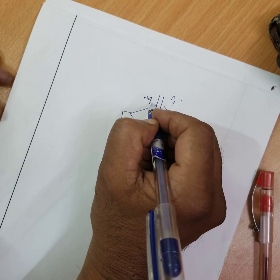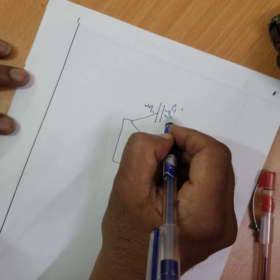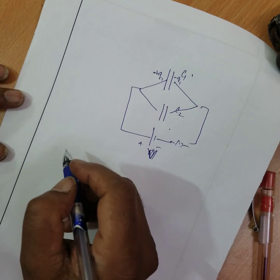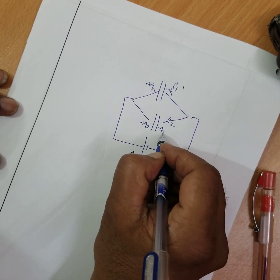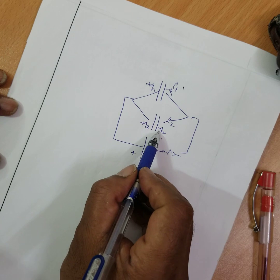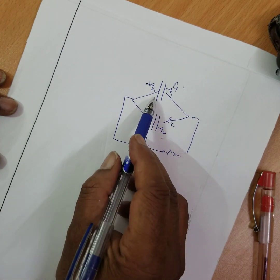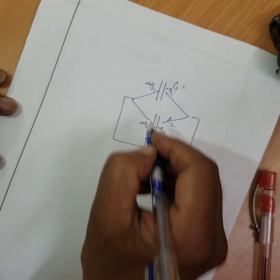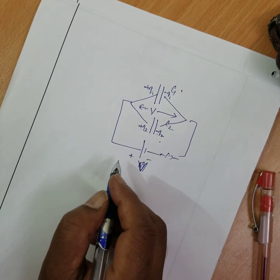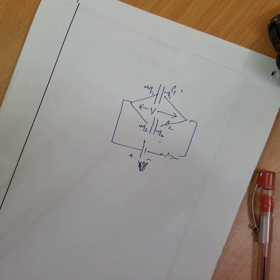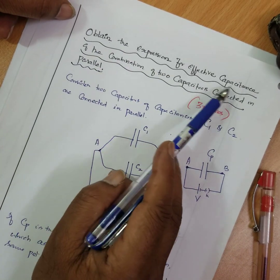Because it's a parallel connection, Q1 is the charge given to capacitor C1 — the positive charge induces a negative charge on the other plate. Similarly, Q2 is the charge induced on C2. Therefore Q1 and Q2 are the charges on the respective capacitors, and V is the common potential.